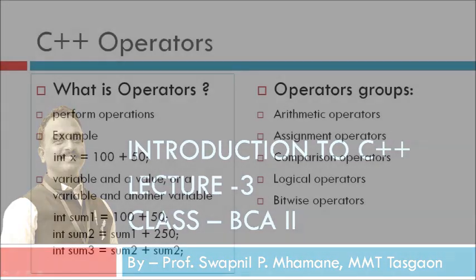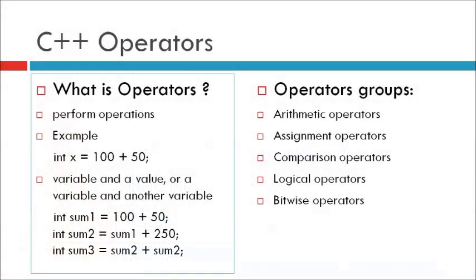Let's start. C++ Operators. Operators are used to perform operations on variables and values. In the example below, we use the plus operator to add together two values. Example: integer x equal to 100 plus 50. Although the plus operator is often used to add together two values, it can also be used to add together a variable and a value, or a variable and another variable.